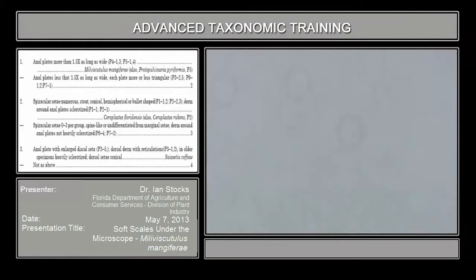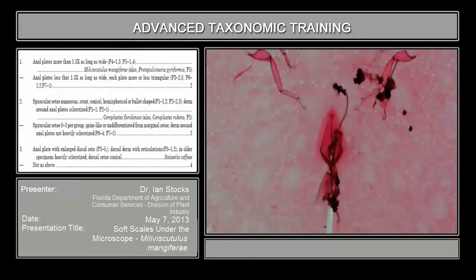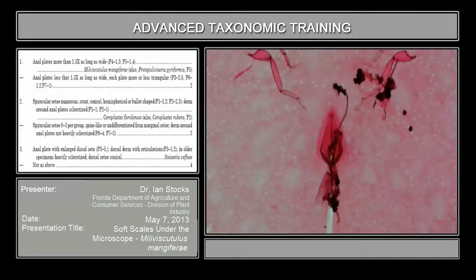We can go back to Milviscutulus mangifery and run through the key. This is obviously a fairly contrived key with a very customized set of taxa here. As someone getting a slide in from wherever, the key that you have access to may read differently in its starting. But for this one, I chose to start with the shape of the anal plates, because they're a very solid, easily seen character that can quickly move some groups out of the way.